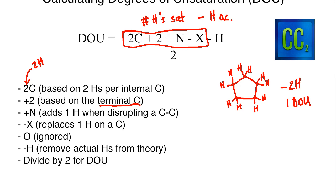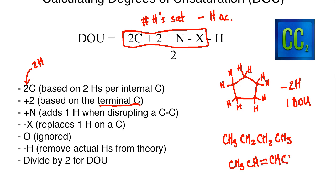The same thing is true of a double bond. Imagine I have a butane — CH₃CH₂CH₂CH₃. If I want to create a double bond in the middle to form an alkene, I have to remove two hydrogens — it becomes CH=CH — so I had to remove a hydrogen from each carbon. Removing two hydrogens is again one degree of unsaturation. For a triple bond I would have to do that twice, removing two additional hydrogens, giving two degrees of unsaturation for a triple bond.